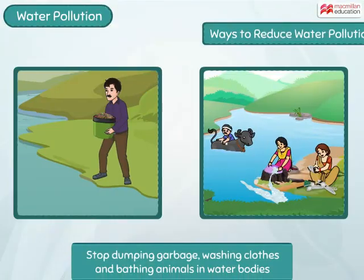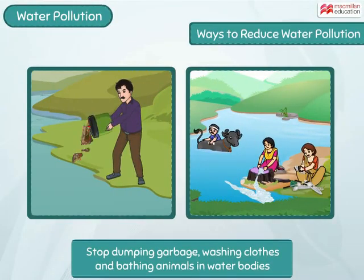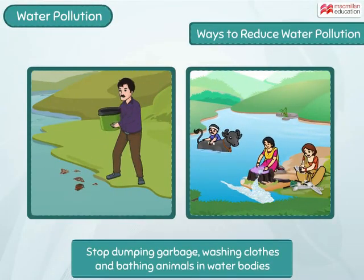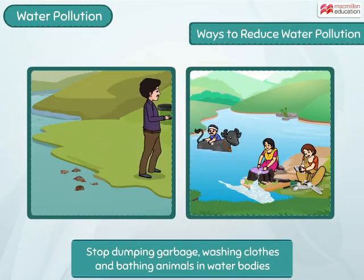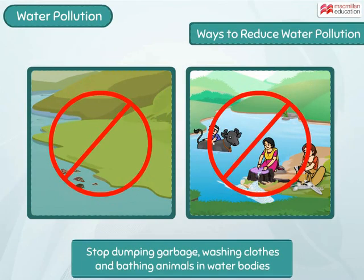One very easy way to reduce water pollution is to educate people to stop dumping garbage, washing clothes, and bathing animals in water bodies like lakes and rivers.